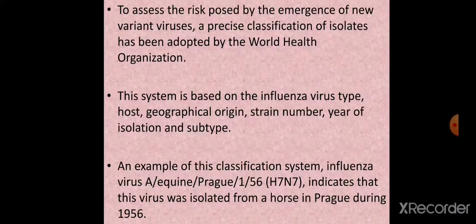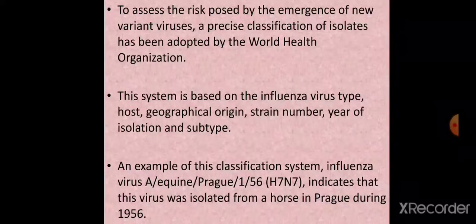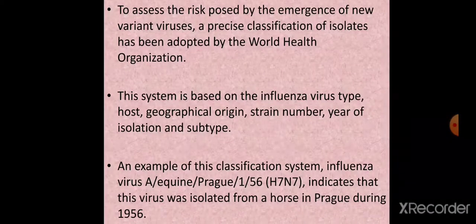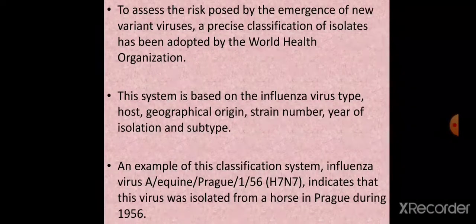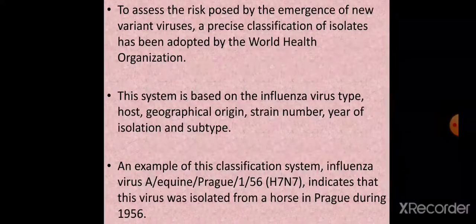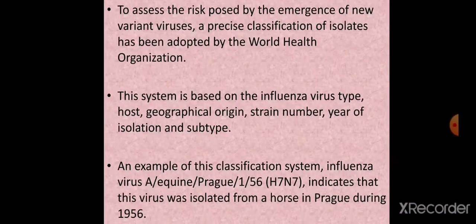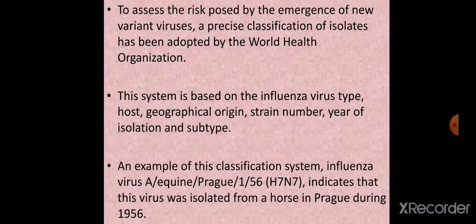To assess the risk posed by the emergence of new variant viruses, a precise classification system adopted by WHO is based on: influenza virus type, host range, geographical origin, strain number, year of isolation, and subtype. For example, 'Influenza virus A/Equine/Prague/1/56 (H7N7)' indicates the virus was isolated from a horse in Prague during 1956 with subtype H7N7.